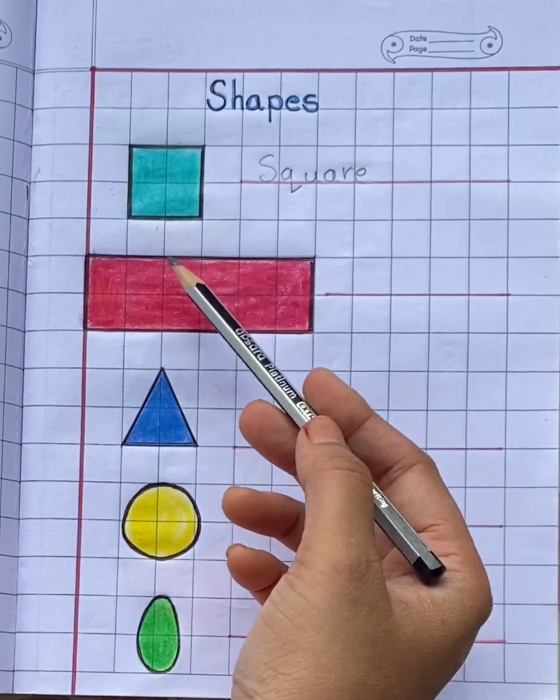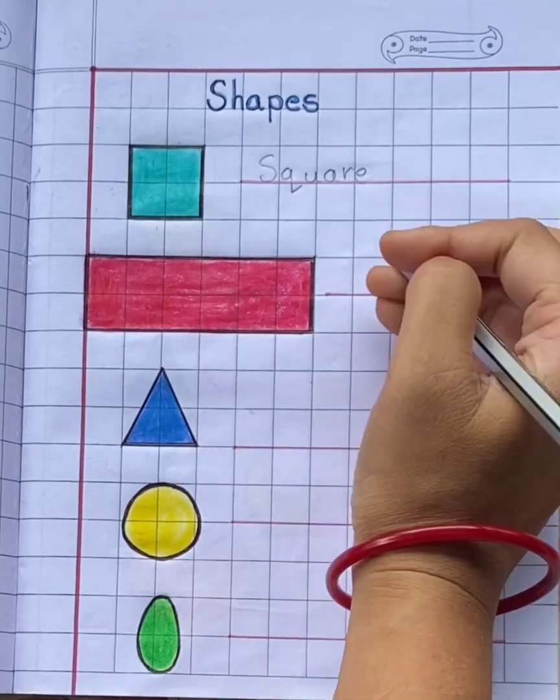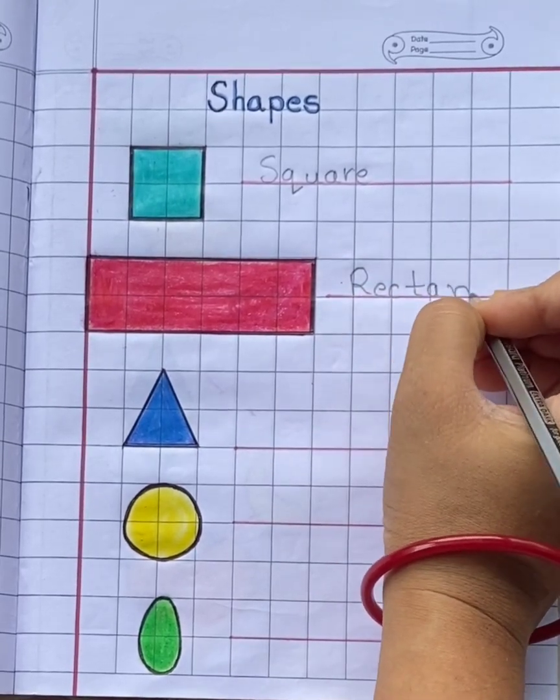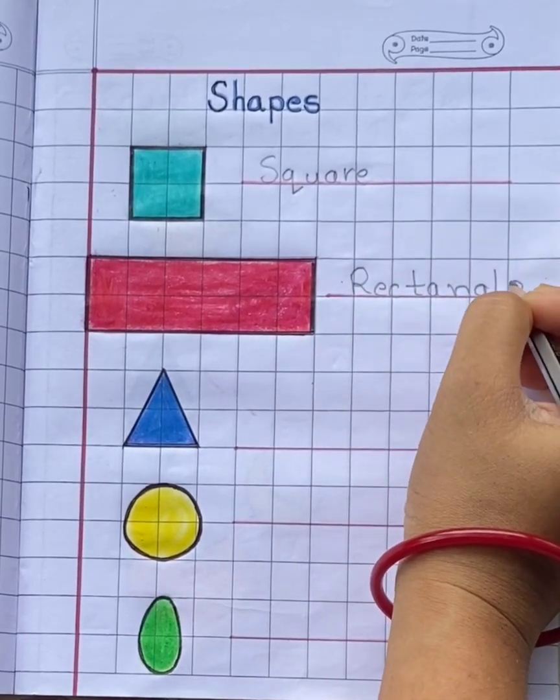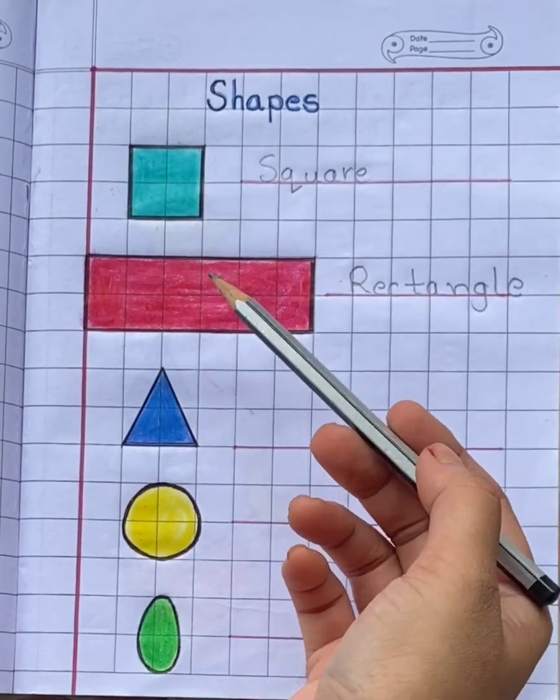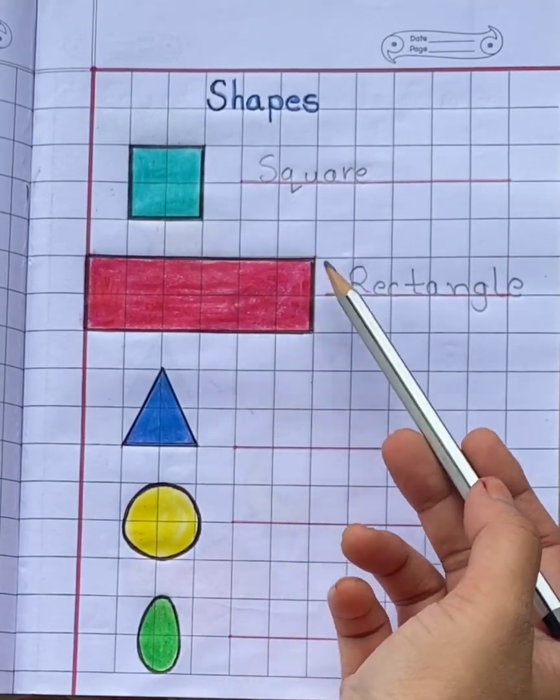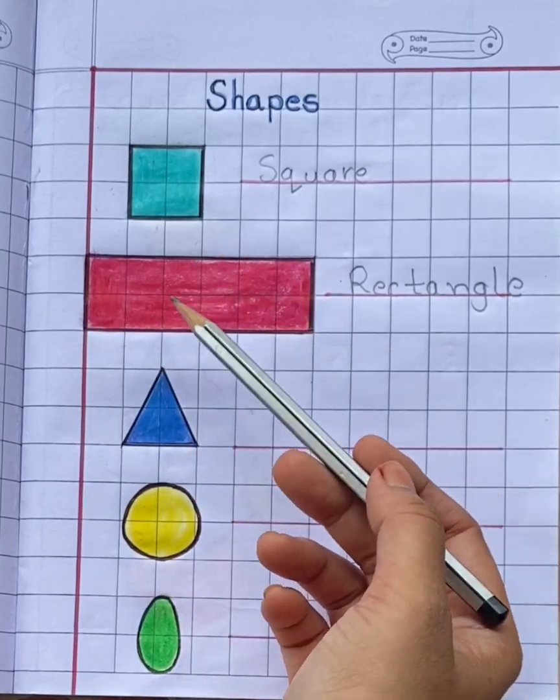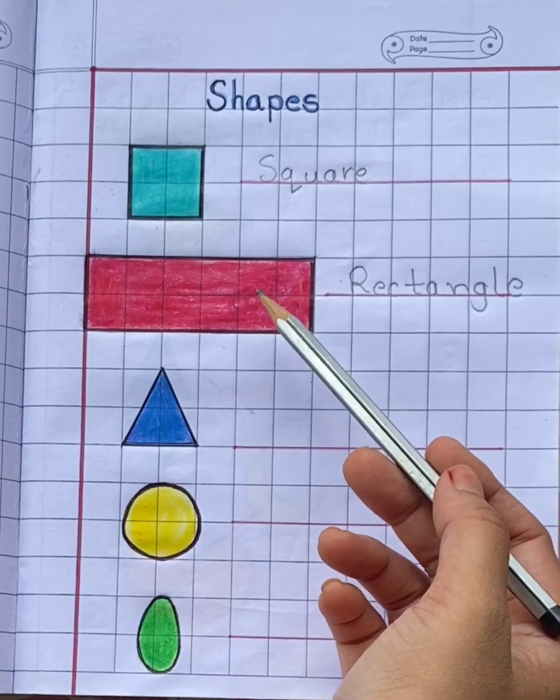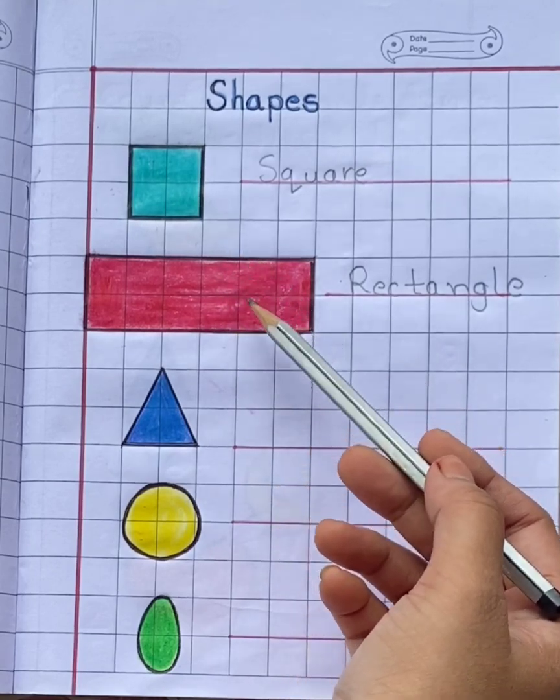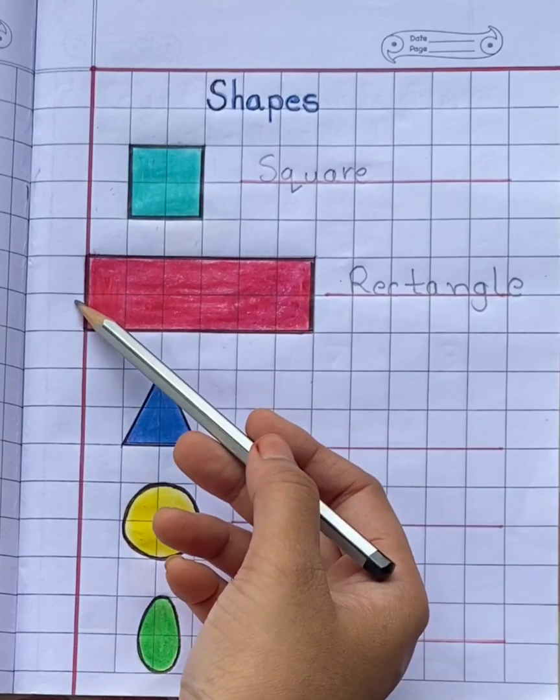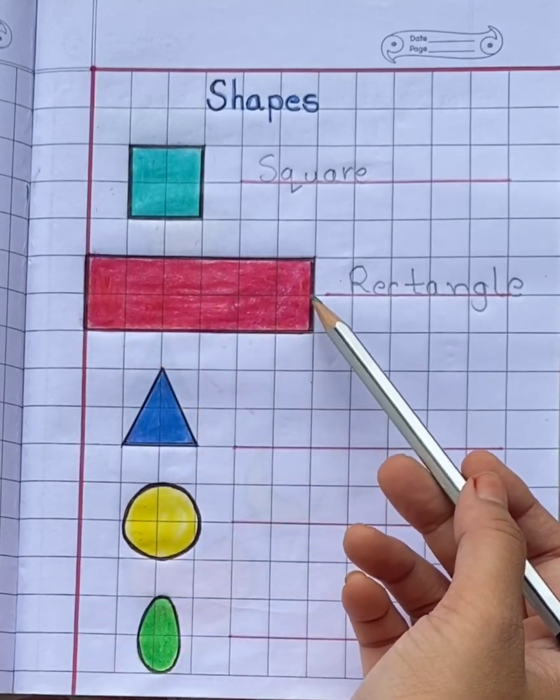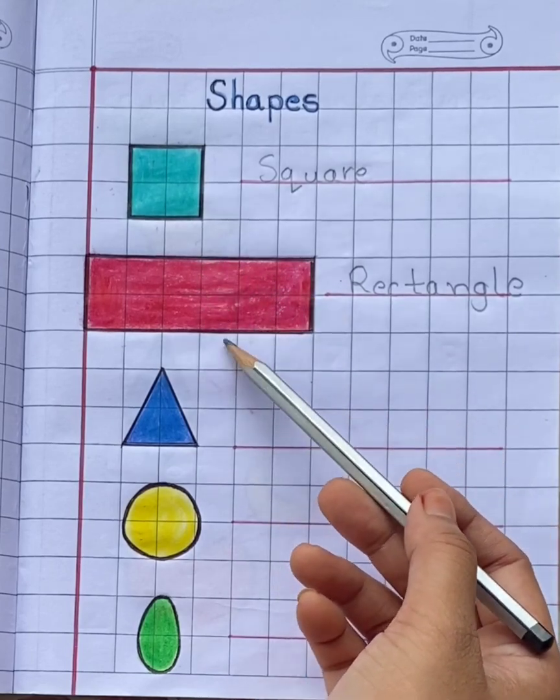Second shape is rectangle. R-E-C-T-A-N-G-L-E. Rectangle also has four sides, but all the sides are not equal. This side is long, this side is short. Opposite sides are equal. In rectangle, opposite sides are equal.